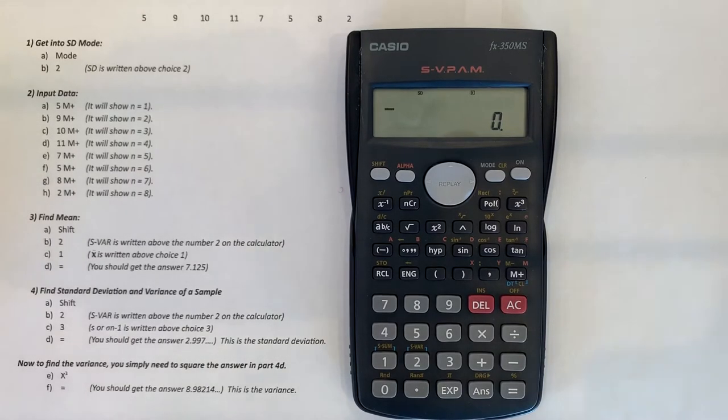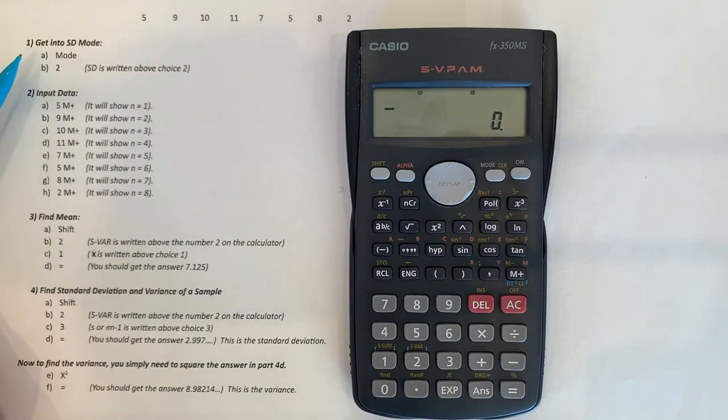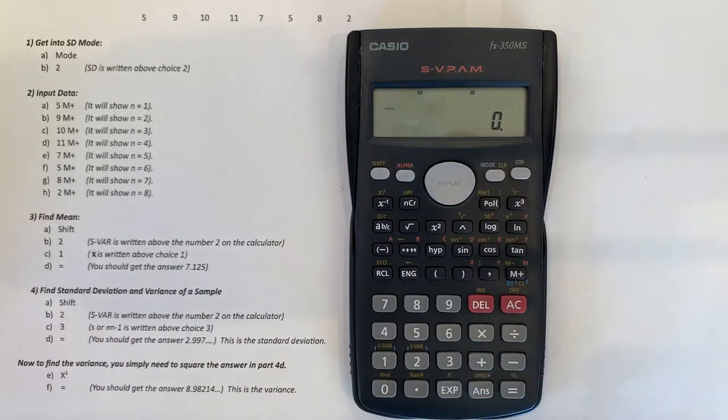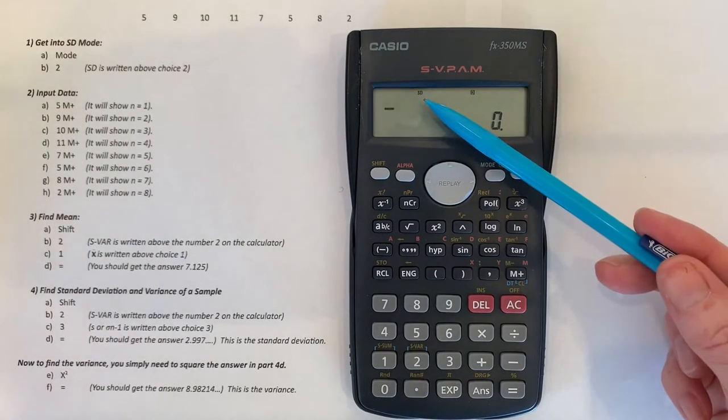The first thing you need to do is get yourself into SD mode. Even if you're already in SD mode, you want to get into it again to clear out any old data. So you do this simply by doing mode 2. We hit the mode button and number 2 and you're in SD mode. You'll see a little SD at the top of the screen.